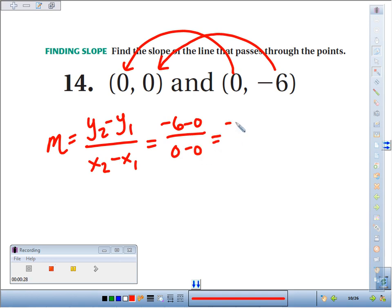What do we end up with? Negative 6 in the numerator and 0 in the denominator. If you were to do this on your calculator, it would spit out error. And that's because we can't divide any number by 0.